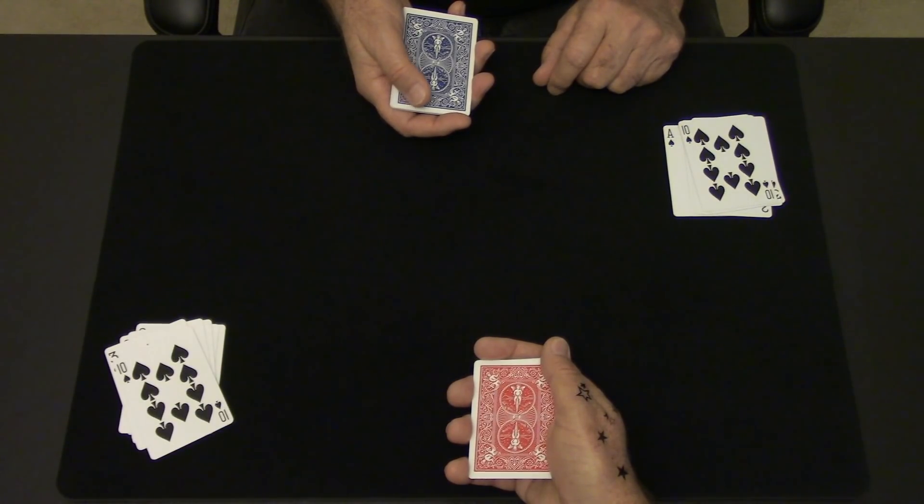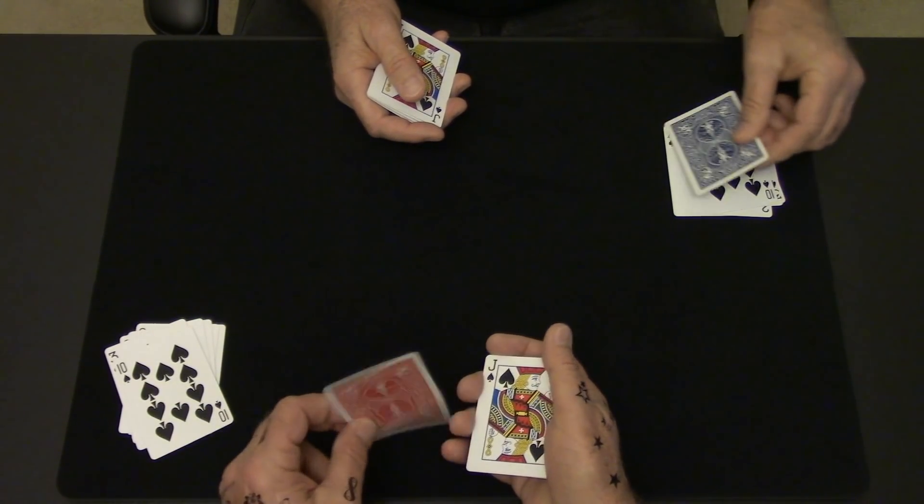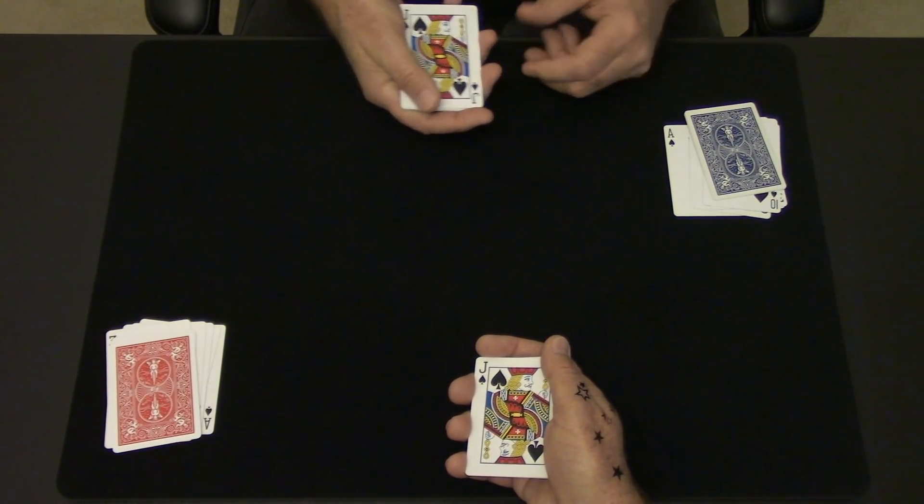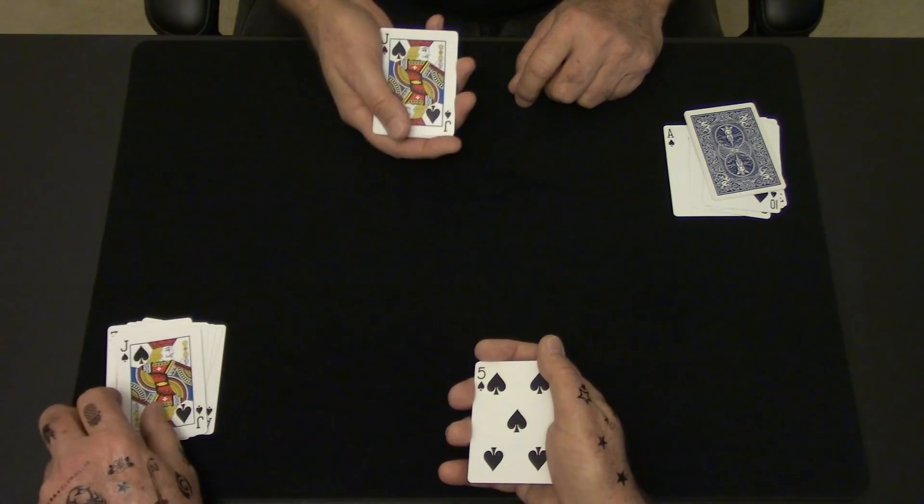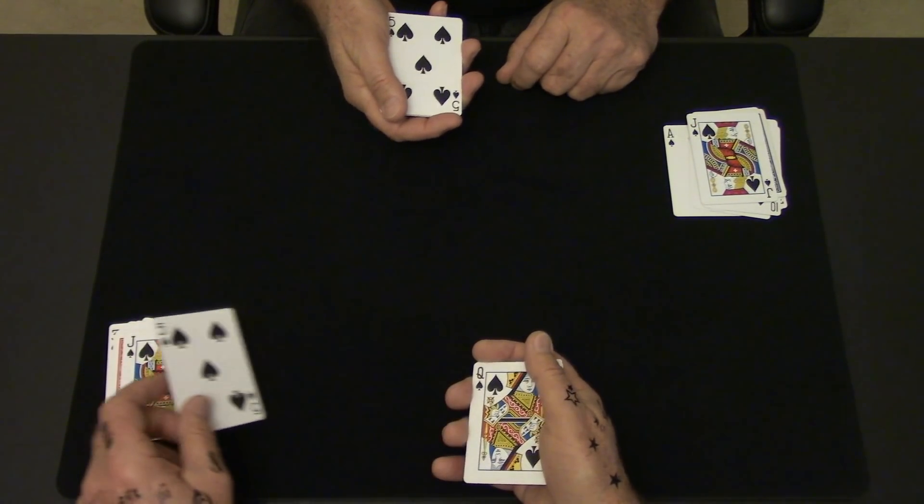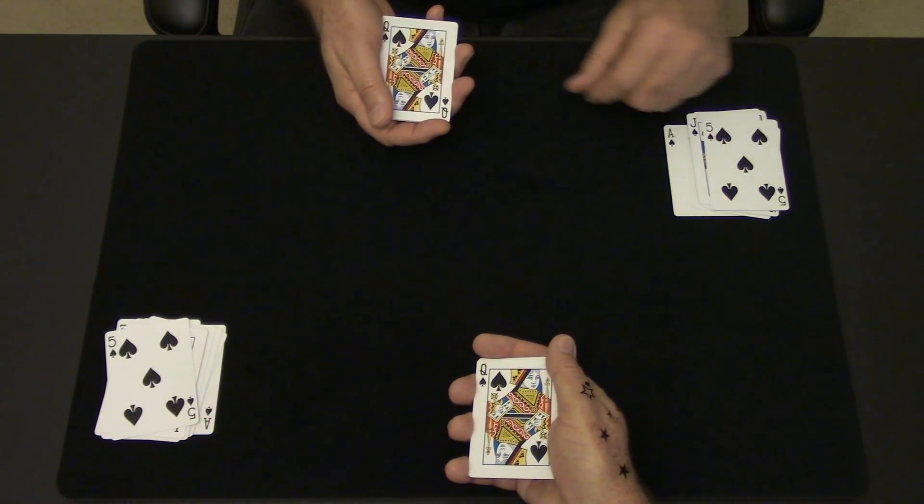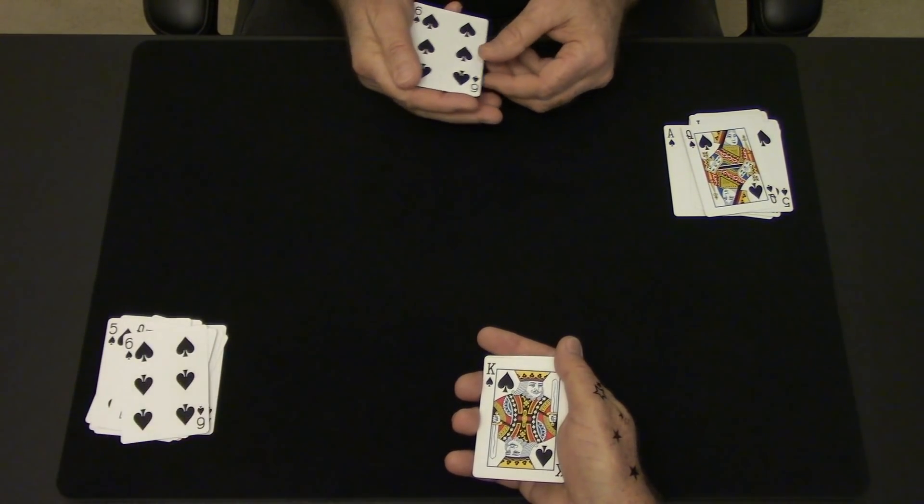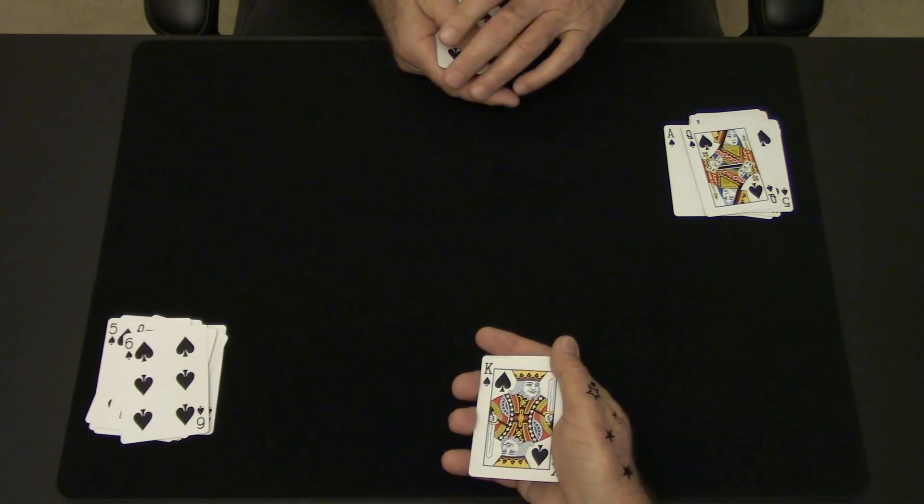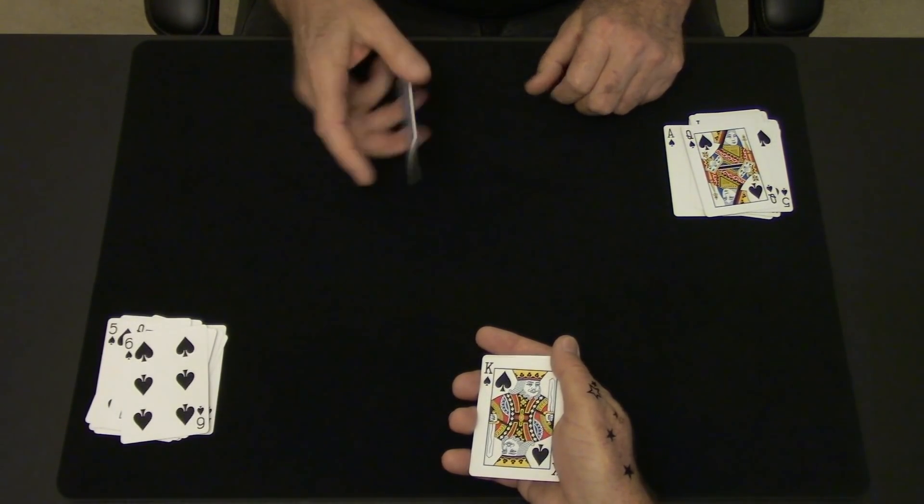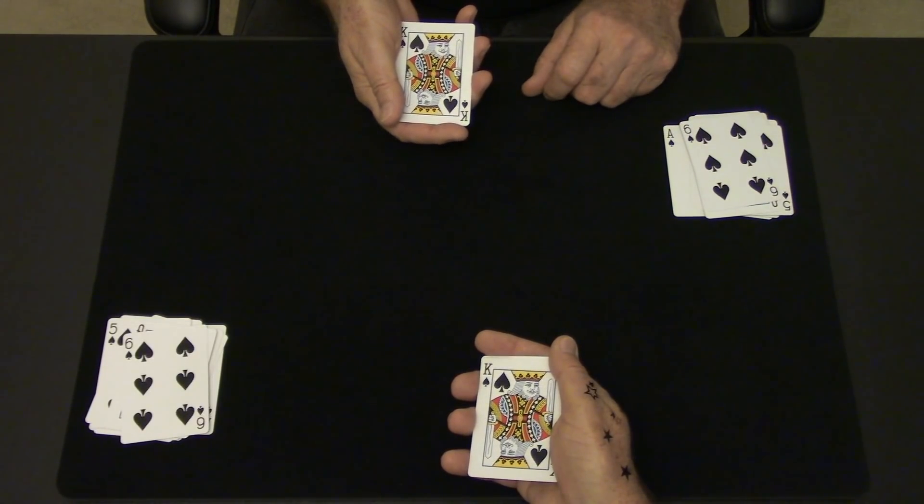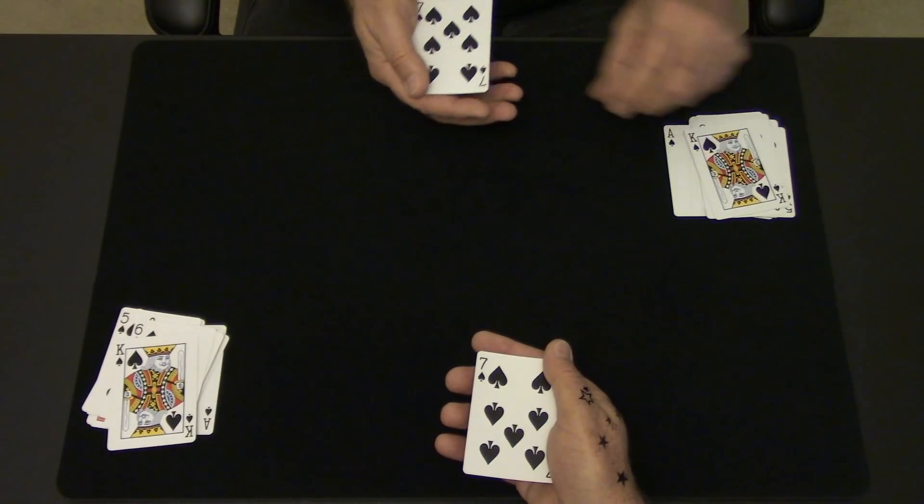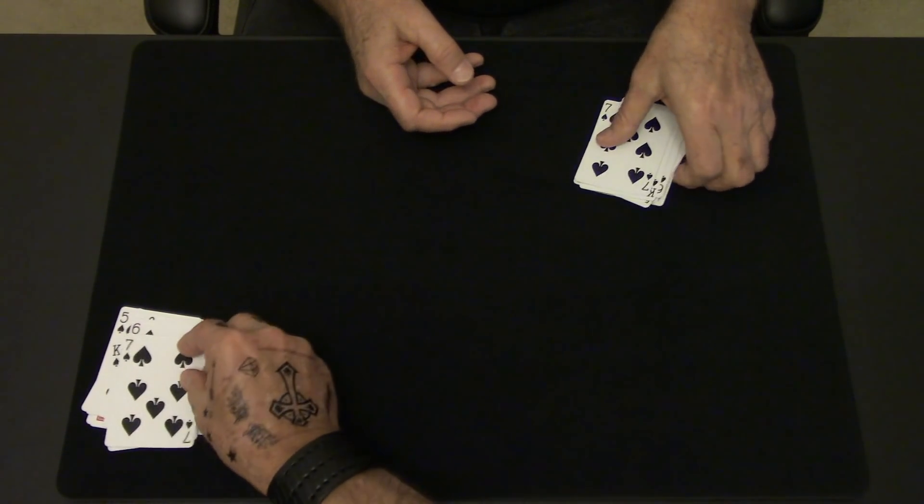You have a face down card. I have a face down card. This one is the four. You have a jack. I have a jack. Let's go a little faster. You have the five. I have the five. You have the queen. I have the queen. You have the six. I have the six. You have the king. I have the... Wait a minute. Need a little more shake. You have the king. I have the king. And you have the seven. And I have the seven. Amazing.